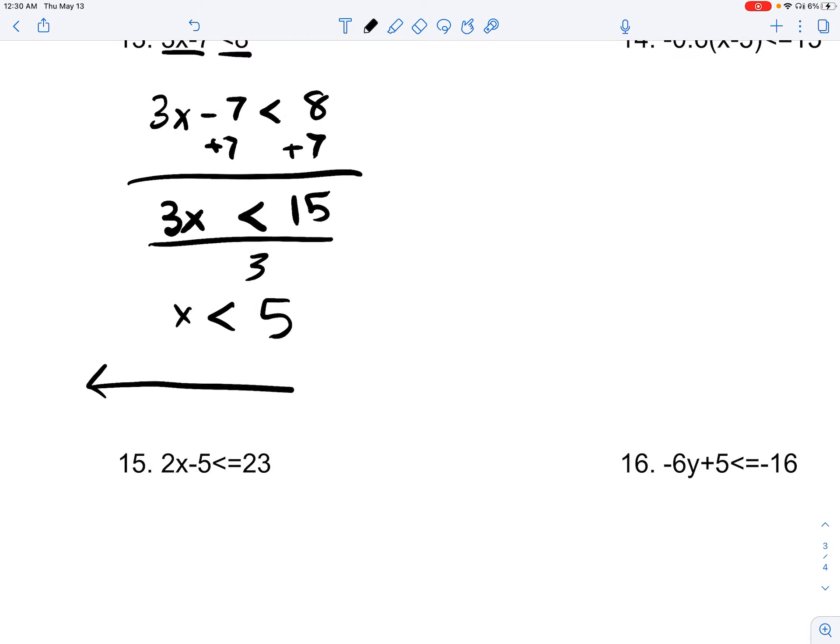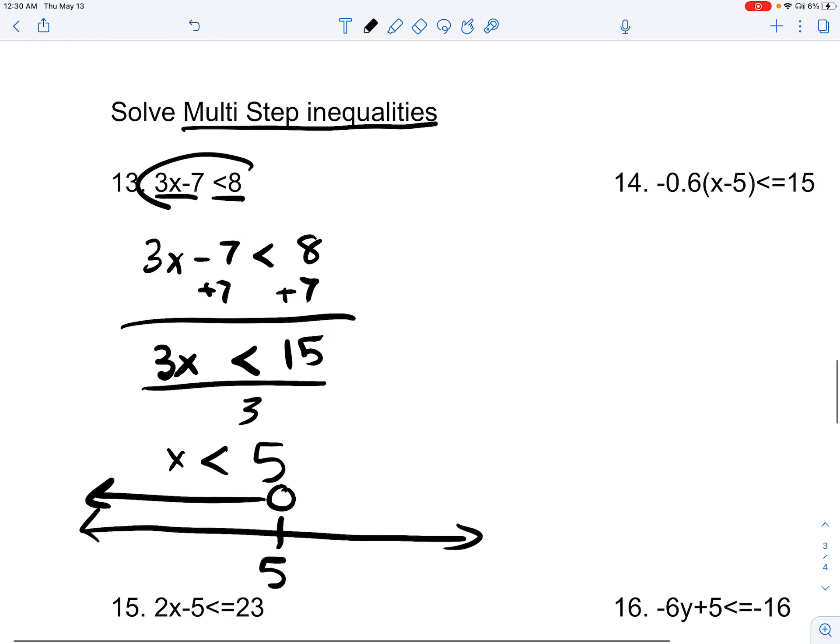That means that on the number line, at the point 5, any number that is less than 5 is going to be the solution to this inequality. So, if I were to put 0, since it's less than 5, this will work. 3 times 0 minus 7 is less than 8. So, negative 7 is less than 8. That's correct.